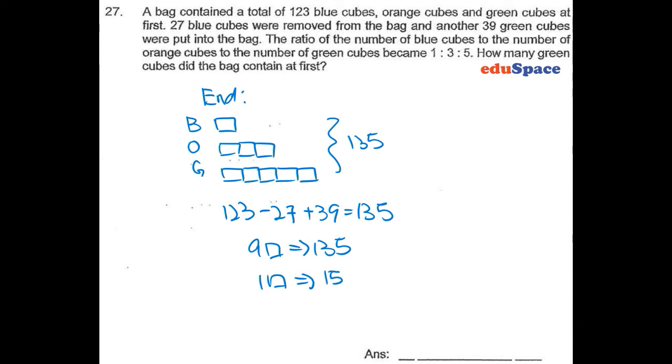The question asks how many green cubes did the bag contain at first. So we have to calculate 5 units, which equals 75. Then we have to minus away 39 because the question asks at first, so the answer will be 36.